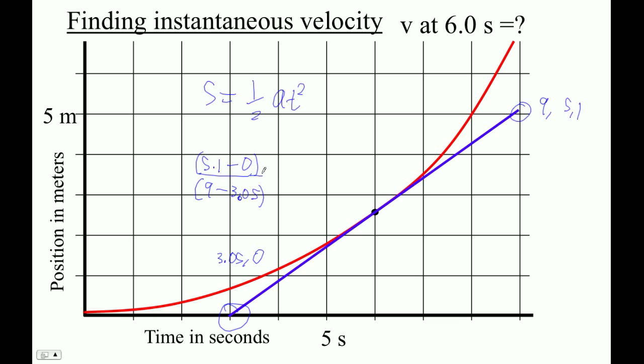If you get within five percent or ten percent of the answer, we're pretty good here. So parenthesis five point one minus zero, right parenthesis, divided by left parenthesis nine minus three point zero five. I'm getting point eight six. Approximately point eight six.